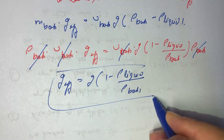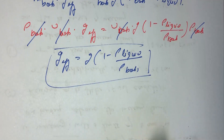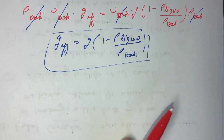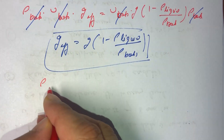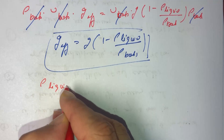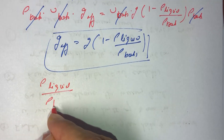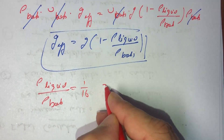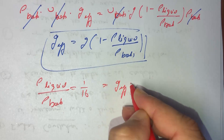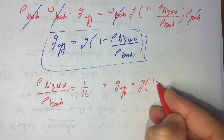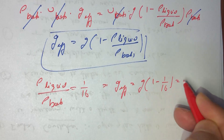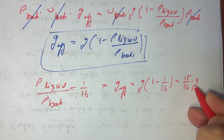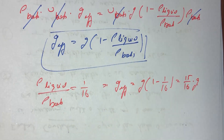Now it is simple — substituting the values. In the question, the density of the liquid to the density of the bob material is given as 1/16. So g_effective = g × (1 − 1/16) = (15/16) × g. So the new time period of the pendulum in the liquid is T_liquid = 2π√(l / g_effective).